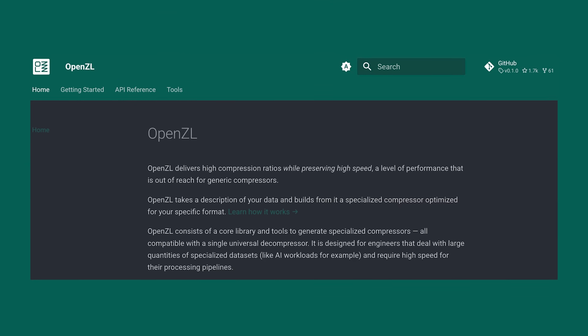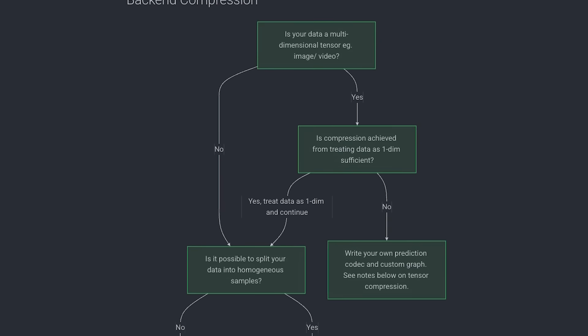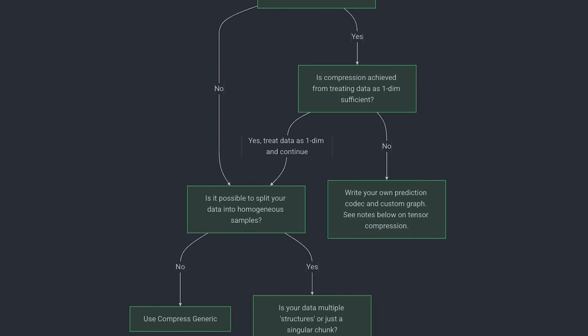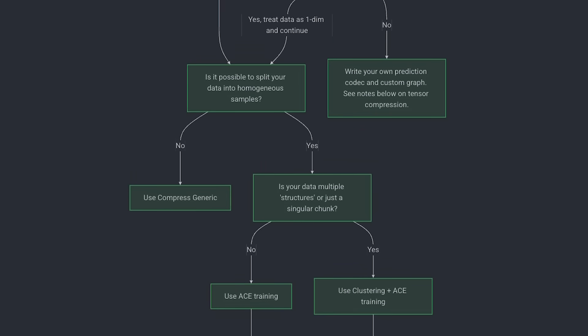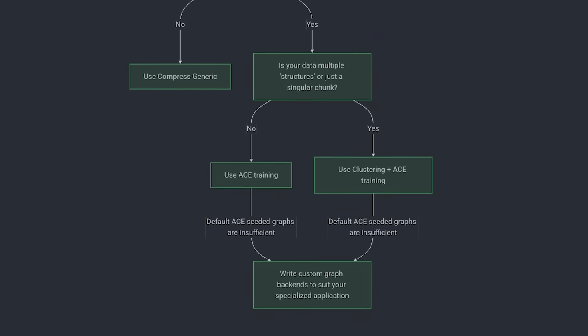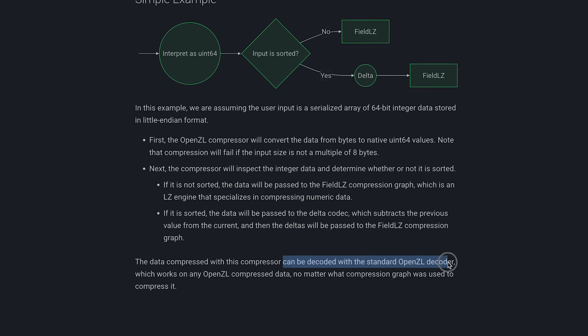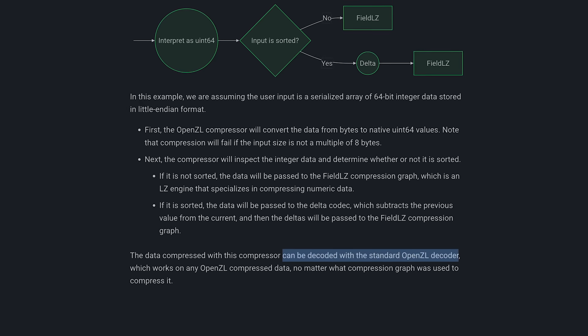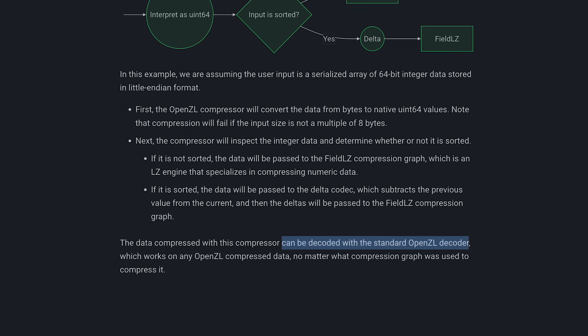OpenZL separates the plan from the decompressor. First, you train or design a compression plan for each data format, but every file, regardless of format, can still be decompressed by a single universal decoder. And that is the main difference.